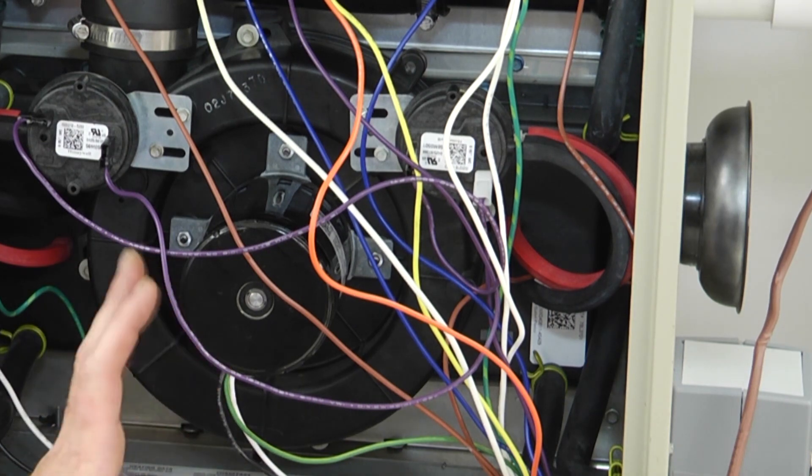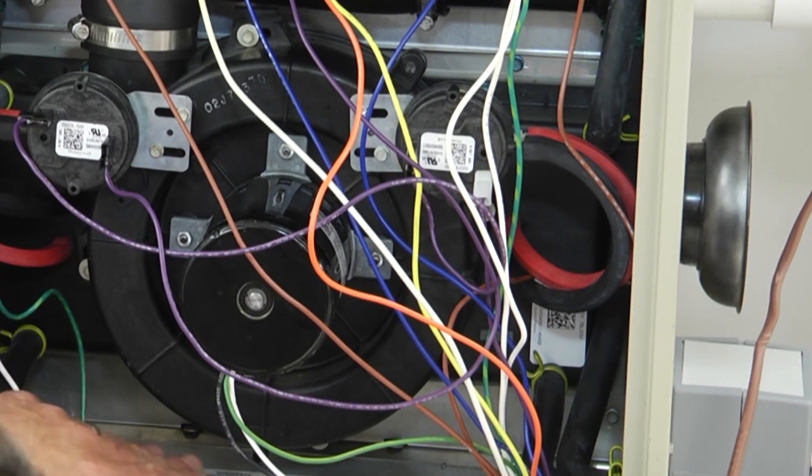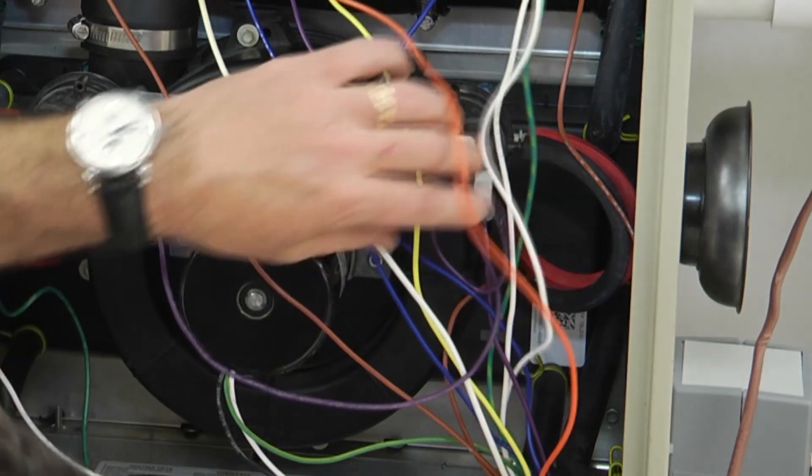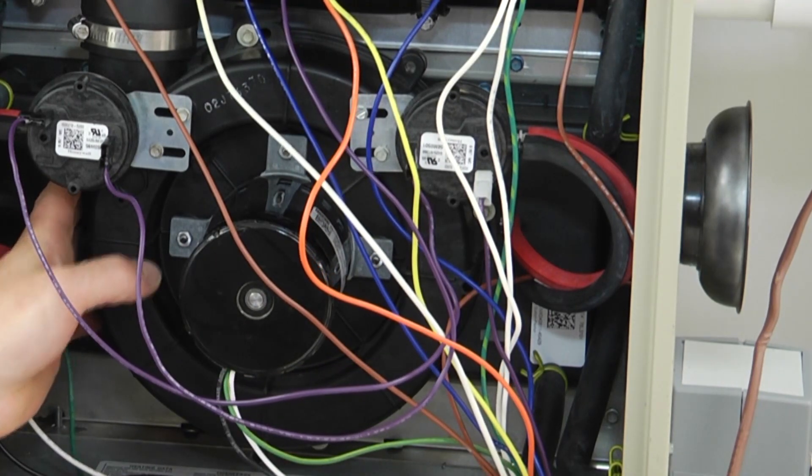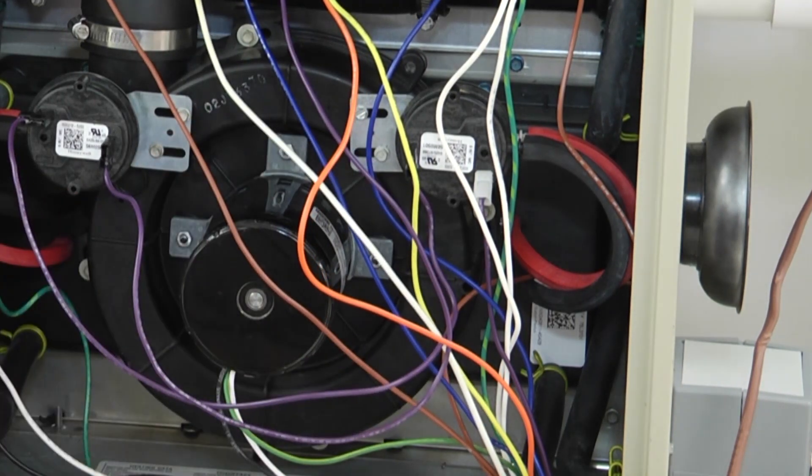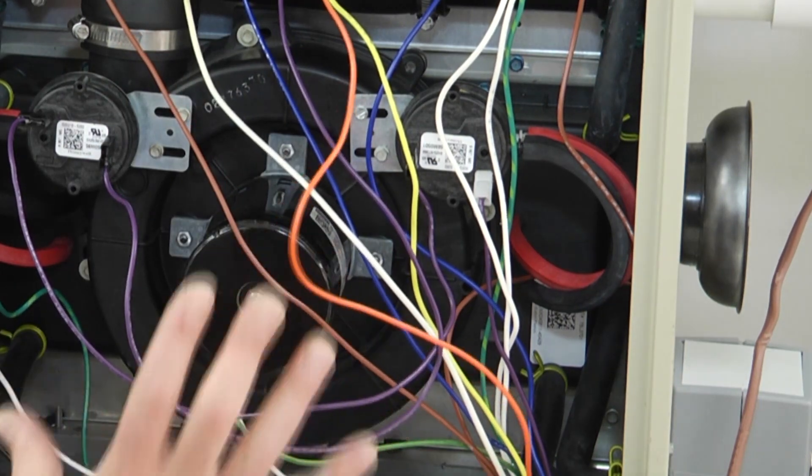So what you're going to want to do first of all is identify the screws. There's one, two, three, four - four screws holding this to the collector box. So we're going to need to remove those four screws. One, two, three, four. Remove that.